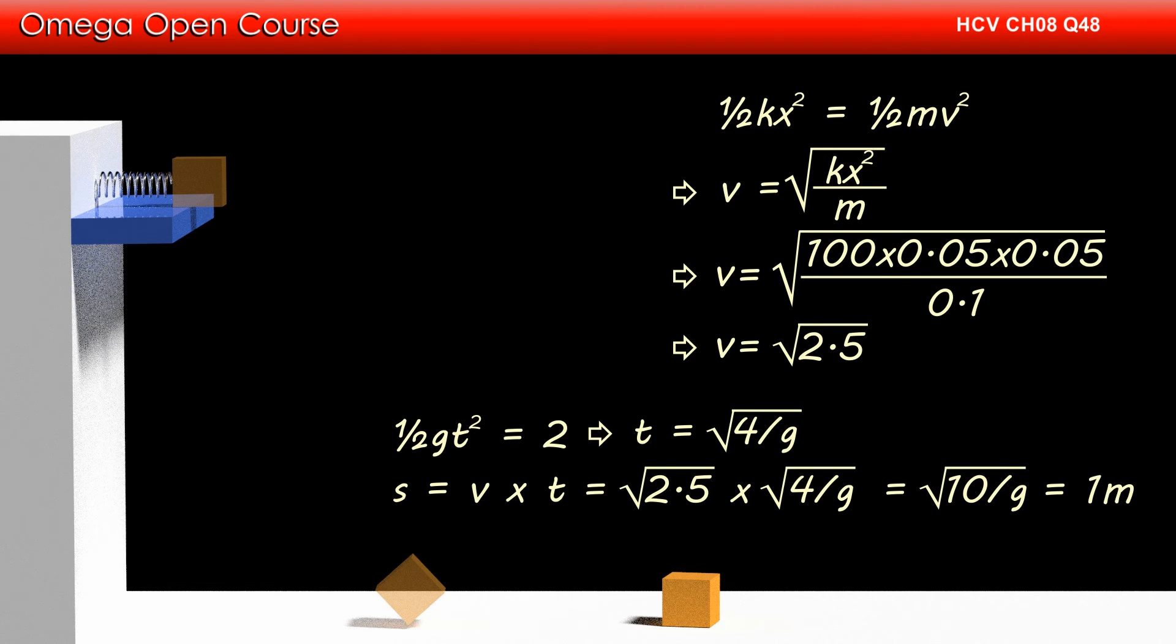If we put g is equal to 10 meter per second square, the horizontal distance becomes 1 meter. This is our answer.